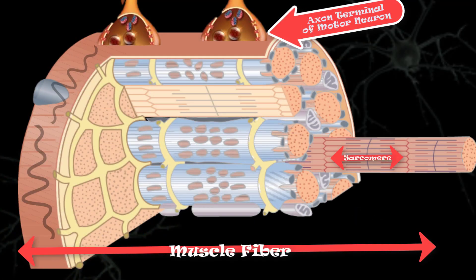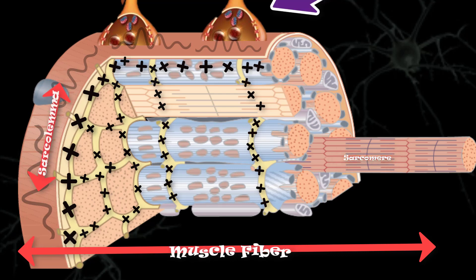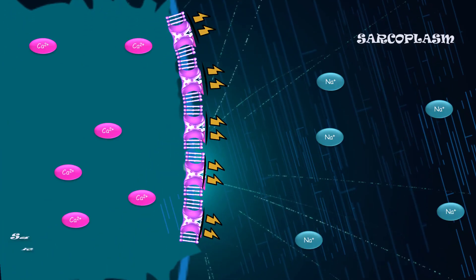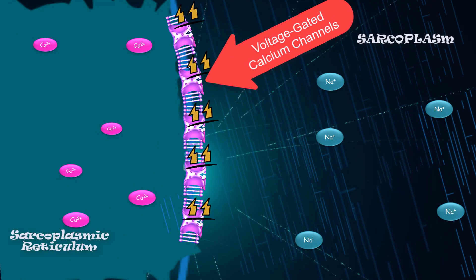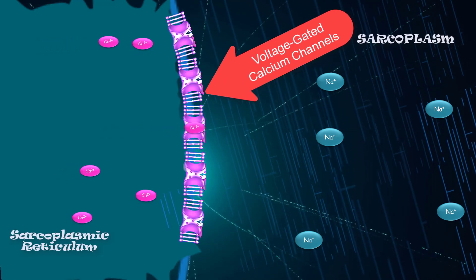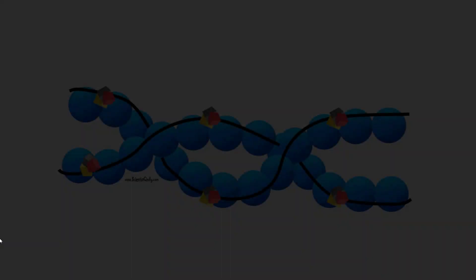This action potential is then propagated across the sarcolemma and down the T-tubules. When the action potential is propagated, voltage-gated calcium channels located on the sarcoplasmic reticulum open. The sarcoplasmic reticulum then releases calcium ions into the sarcoplasm.